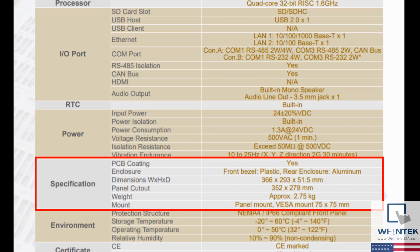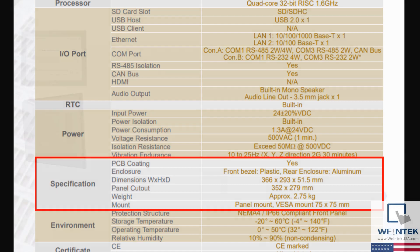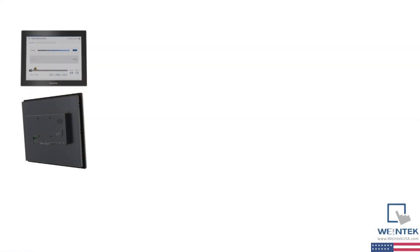Our specification section will show various information on the hardware. PCB coating is a thin polymeric film applied to a PCB board to protect the board and its components from the environment and corrosion. The enclosure is made up of two parts, the front bezel which is plastic and the back plate which is aluminum.